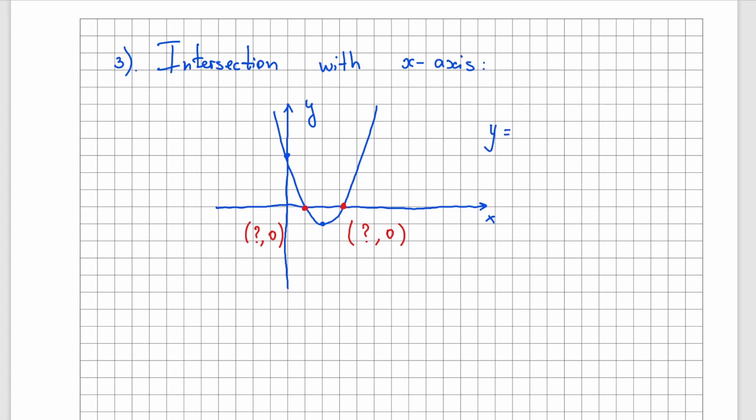Again, look at the equation of our function. y equals to x squared minus 4x plus 3. Because we are looking for the intersection with x-axis, we know that y equals to 0. So we can make x squared minus 4x plus 3 to be 0. And all we have to do is to solve this quadratic equation. Now at this point, you already know three ways to do so. By using the formula, by completing the square, or by factorizing.